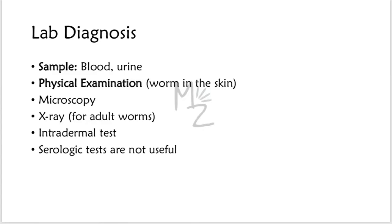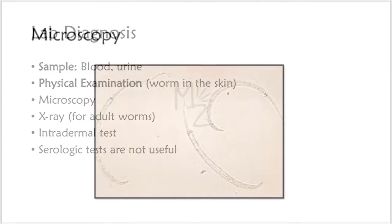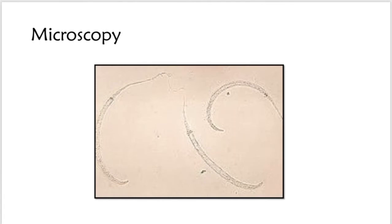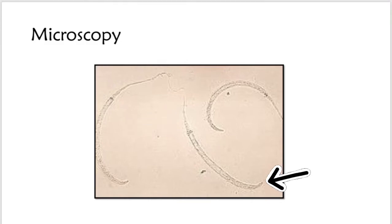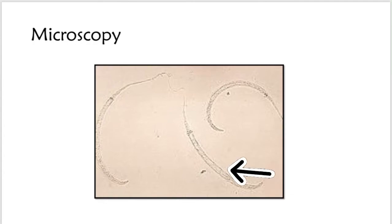Under the microscope, this is the adult Dracunculus worm. The posterior end is narrow compared to the whole body — meaning it is tapering. The anterior end and the smooth body surface are also visible.